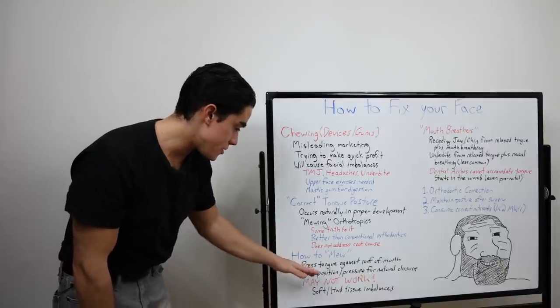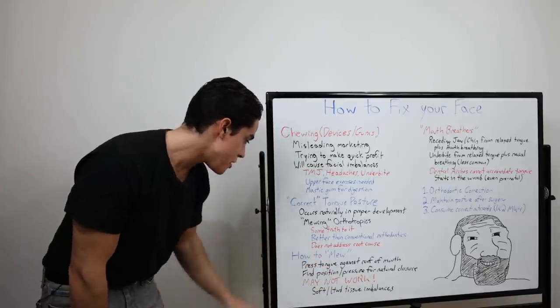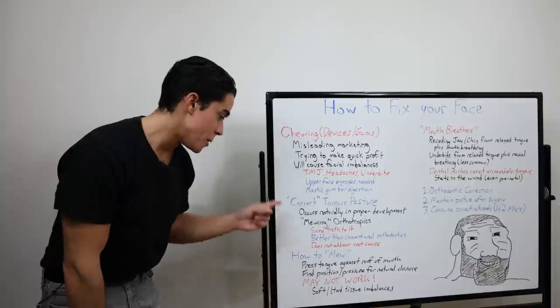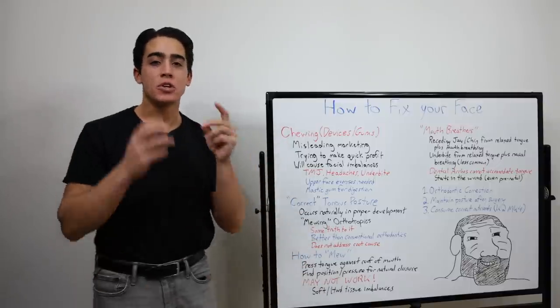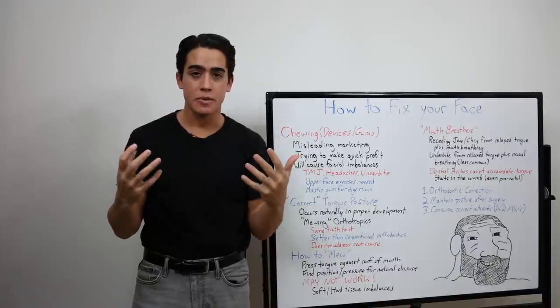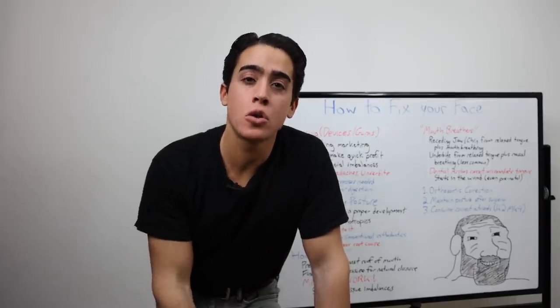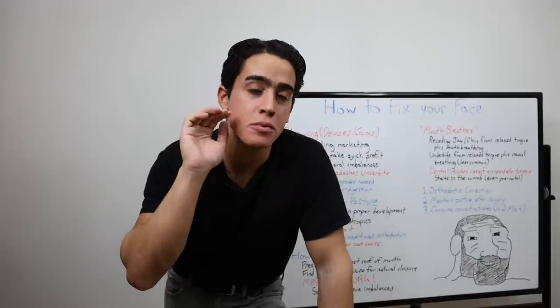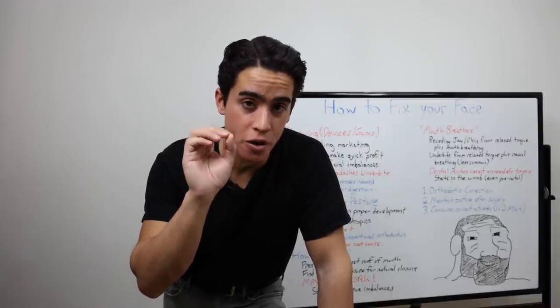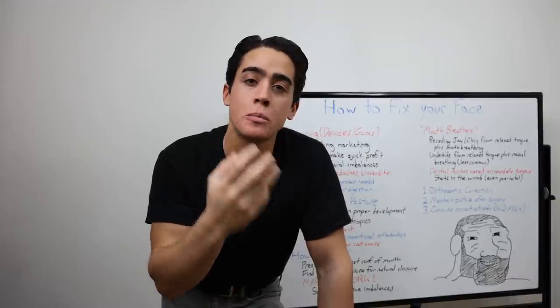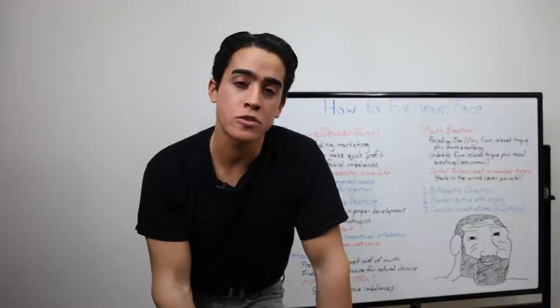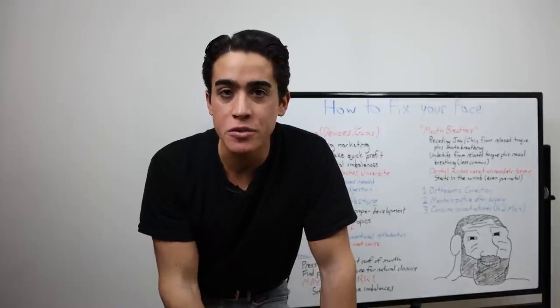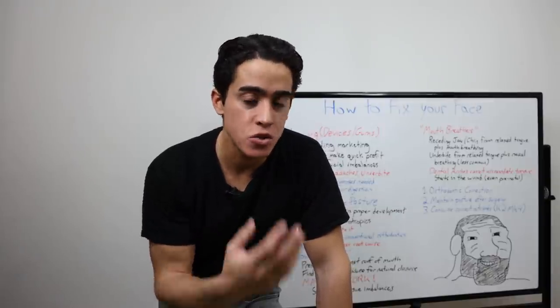So mewing is pretty simple. All you're really doing is pressing your tongue against the roof of your mouth, finding a position and a certain amount of pressure for the natural closure of your jaw. But it may not work if your teeth and jaw are messed up, if they're not aligned properly. So there's two ways to close your jaw if it's open. One way is to clench it using your jaw muscles. The other way is if you press, almost suction your tongue against the roof of your mouth, your mouth will close and teeth will meet in the most natural way. The tongue also supports the roof of your mouth and that upper facial tissue development.